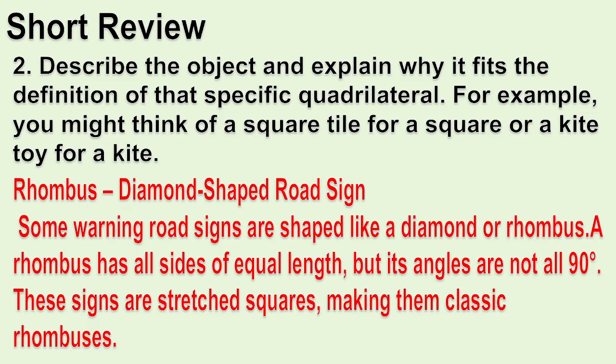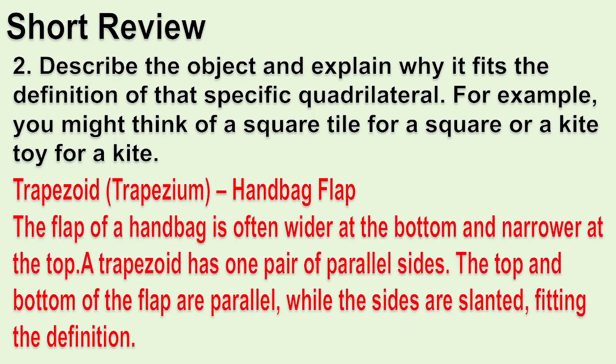Rhombus — Diamond-shaped road sign: Some warning road signs are shaped like a diamond or rhombus. A rhombus has all sides of equal length but its angles are not all 90 degrees. These signs are tilted squares, making them classic rhombuses. Trapezoid or Trapezium — Handbag flap: The flap of a handbag is often wider at the bottom and narrower at the top. A trapezoid has one pair of parallel sides. The top and the bottom of the flap are parallel while the sides are slanted, fitting the definition.